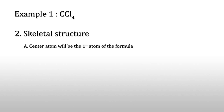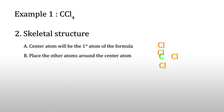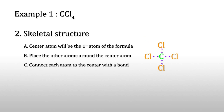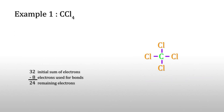Now, for the skeletal structure: first we write the center atom, which will be the first atom of the formula — that is C. Then place the other atoms, the four chlorines, around the center atom. Connect each atom to the center with a covalent bond. Each bond accounts for two electrons, so that is eight electrons used.